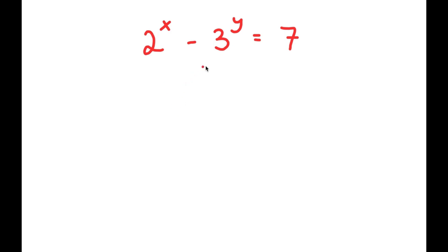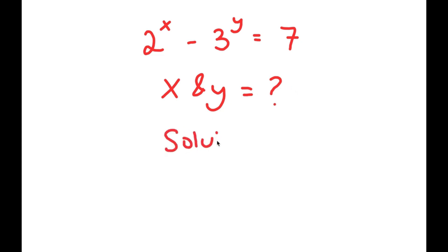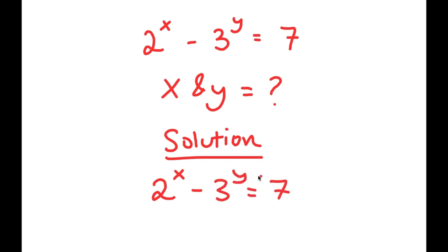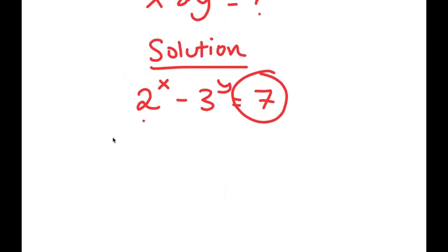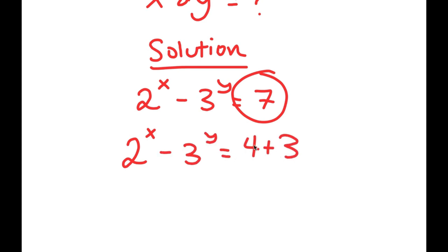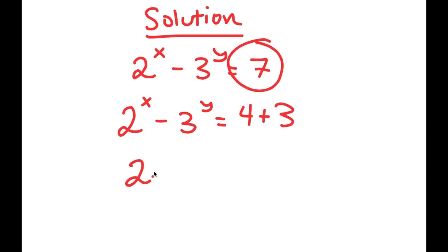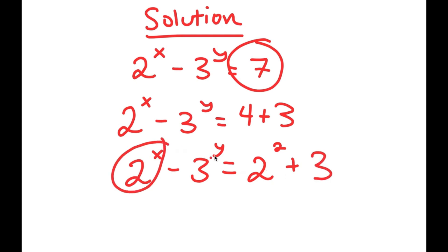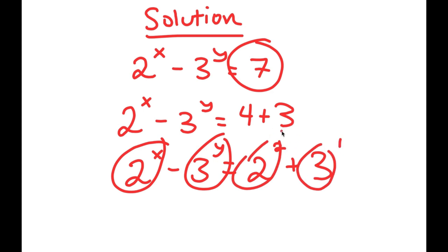In this problem, I have 2 to the power of x minus 3 to the power of y is equal to 7, and I want to find the values of x and y. For my solution, I'm going to rewrite 7 as 4 plus 3. So now I have 2 to the power of x minus 3 to the power of y is equal to 4 plus 3. The reason I did this is because 4 is the same thing as 2 squared. So I get 2 squared plus 3, and I have something in the form 2 to the power of a number minus 3 to the power of a number, where the right side has 2 squared and 3 to the power of 1.